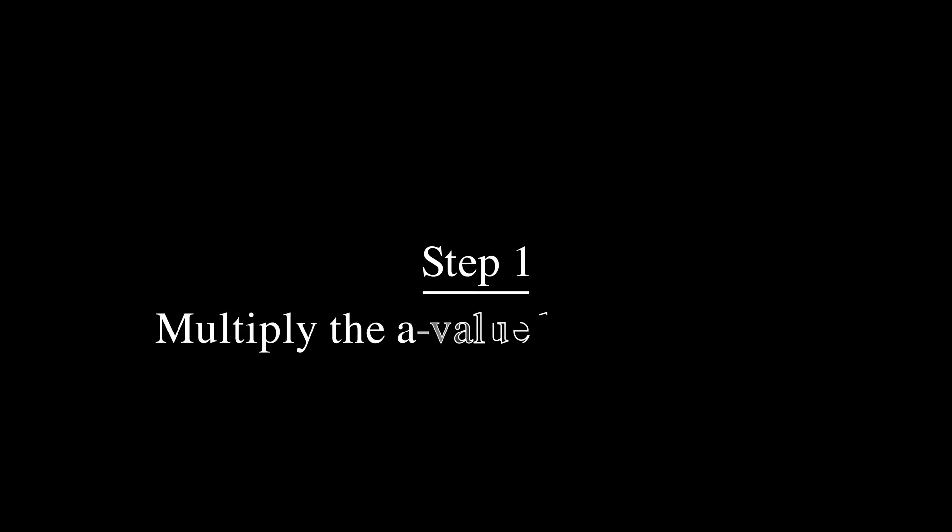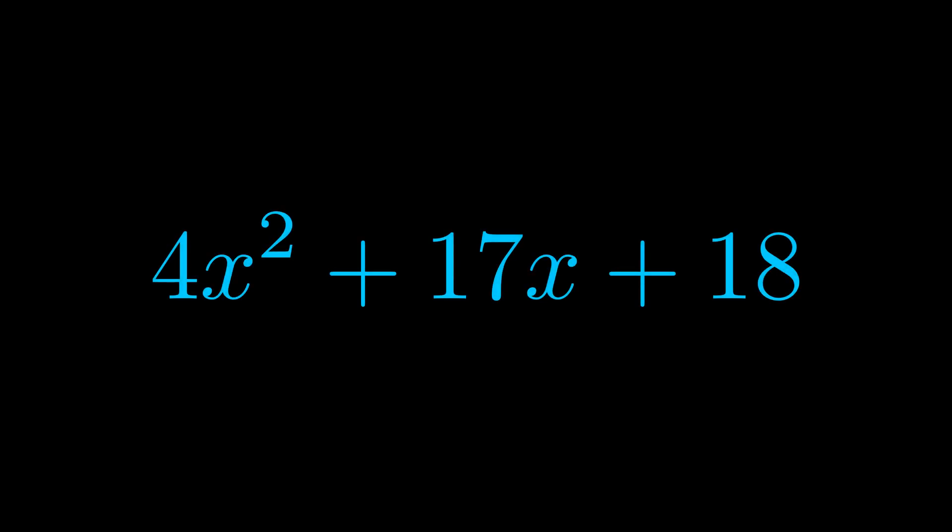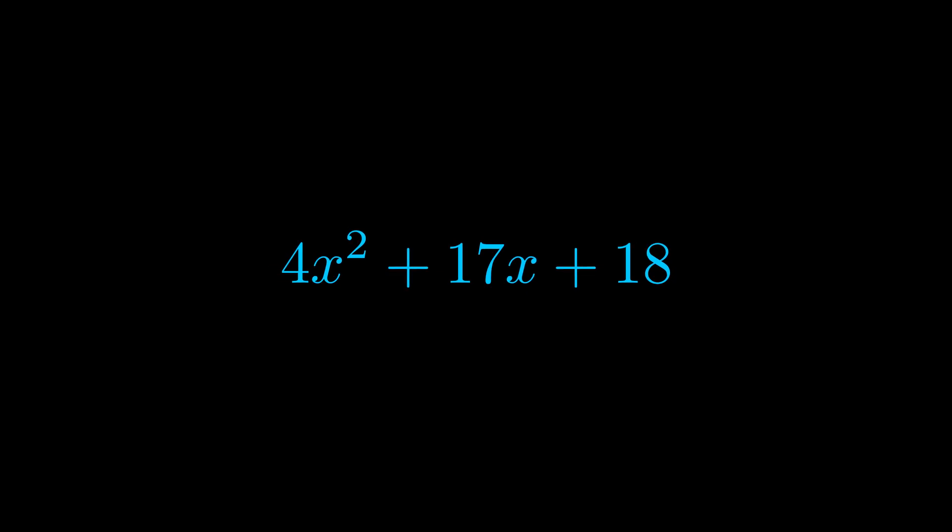Step one when factoring an equation of this form is to multiply the a value by the c value. Here we can see that our a value is the coefficient on the x squared term and our c value is the constant term.